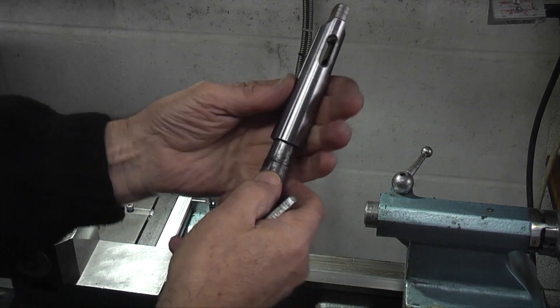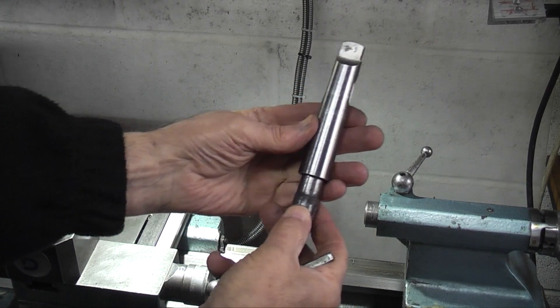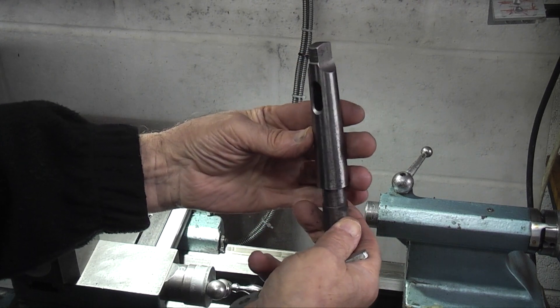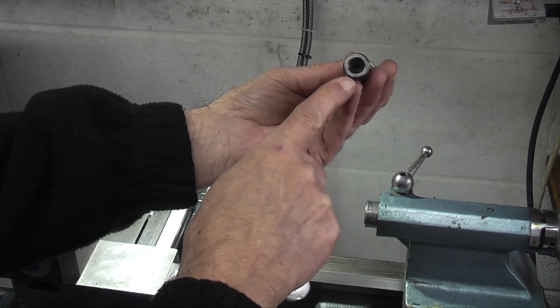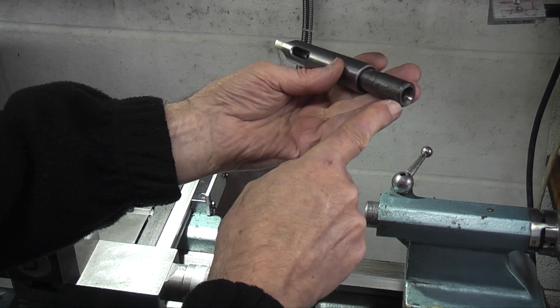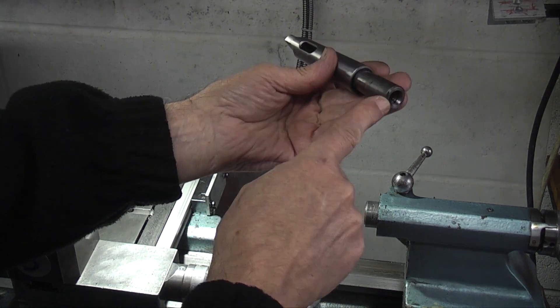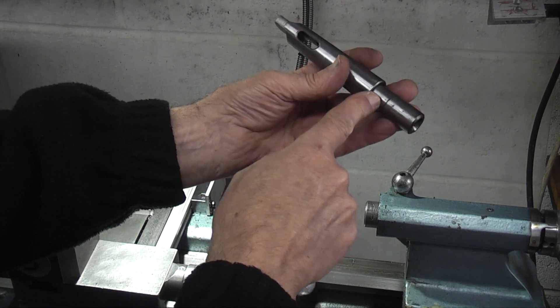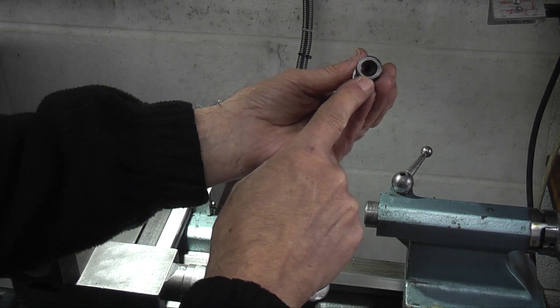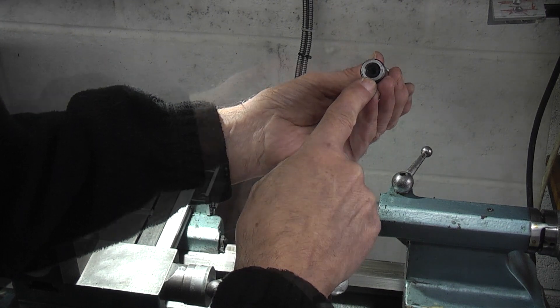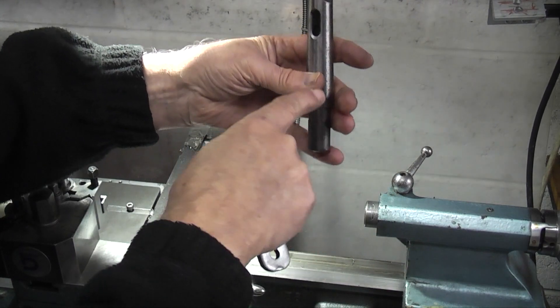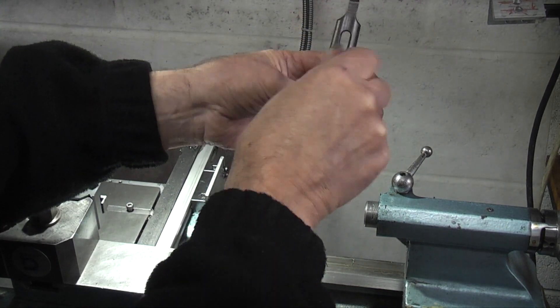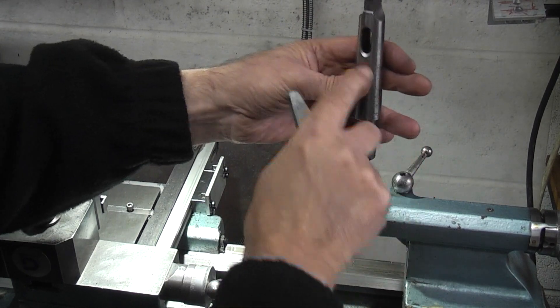I have a number two to three morse taper sleeve and I want to use this to check the taper. As you can see I already have a morse taper fitted inside and this has a center already machined into it. As the tang is not showing in the slot if you put a drift in it won't do anything.